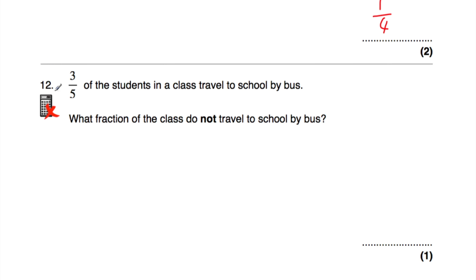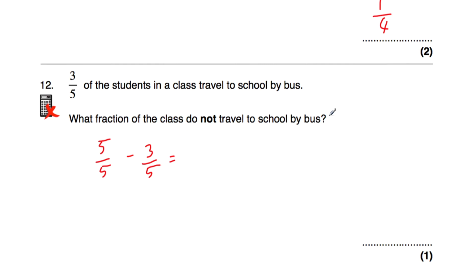Let's have a look at question number twelve. Question twelve says: three fifths of the students in a class travel to school by bus — what fraction do not travel to school by bus? Students either travel by bus or not, so those fractions must add to a whole, which is five fifths. We do five fifths take away three fifths, which equals two fifths. So two fifths of the class do not travel to school by bus.